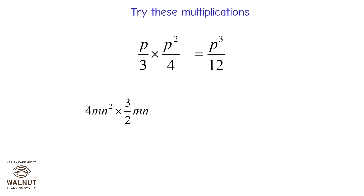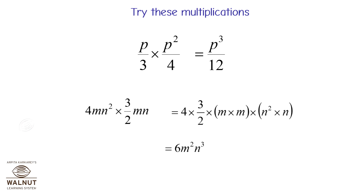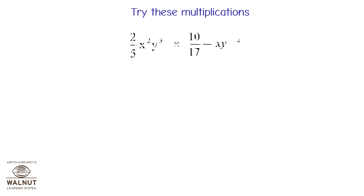4mn squared into 3 upon 2mn is equal to 4 into 3 upon 2 into m into m into n squared into n, which is equal to 6m squared n cubed.